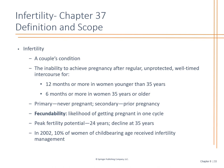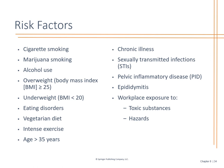Lastly, infertility: this is the inability to achieve a pregnancy after regular, unprotected, well-timed intercourse. Remember age plays a role — 12 months or more if under 35, 6 months or more if over 35. Primary infertility is if they've never been pregnant; secondary is if they've had prior pregnancies. Fecundability is the likelihood of getting pregnant in one cycle. Fertility starts to decline at age 35. Risk factors for infertility include smoking, alcohol, being overweight or significantly underweight, intense exercise, and being over 35.